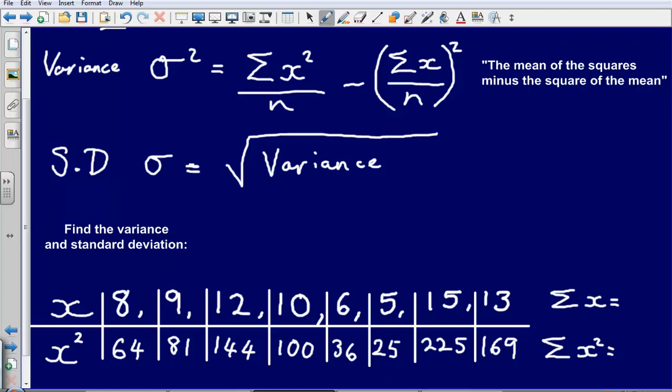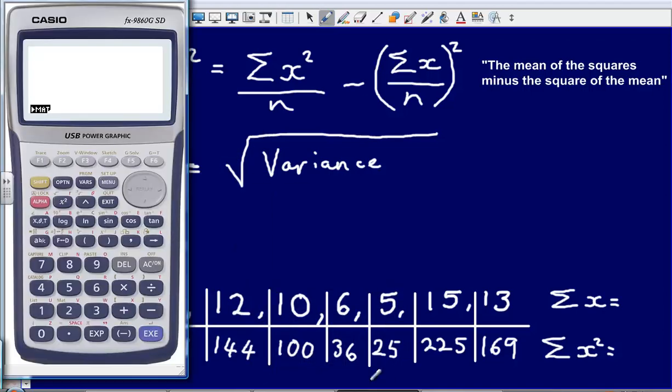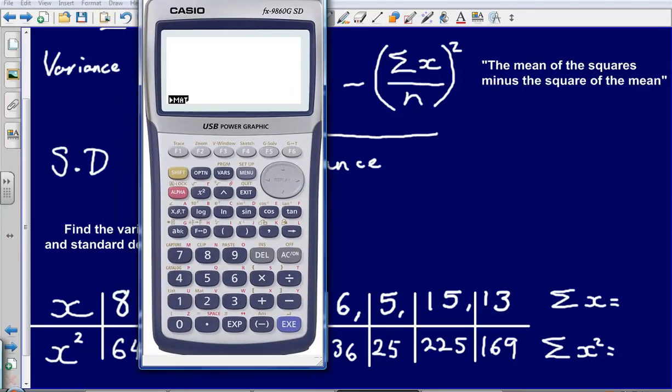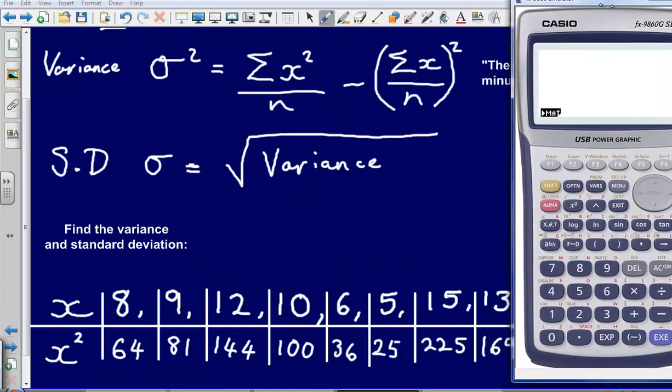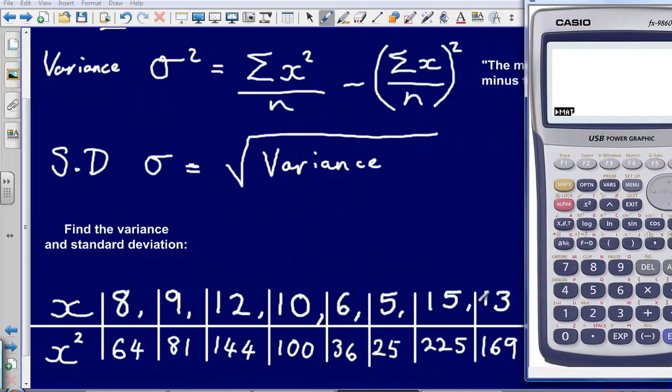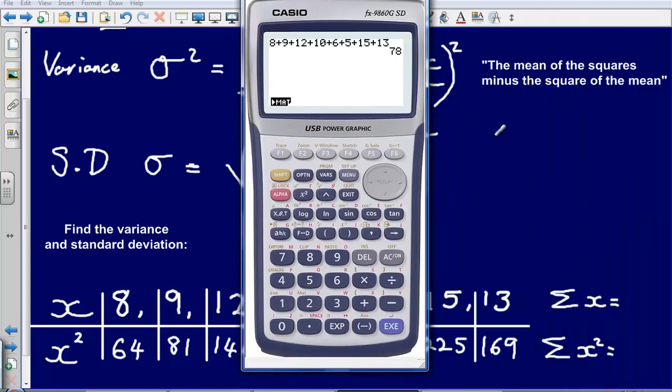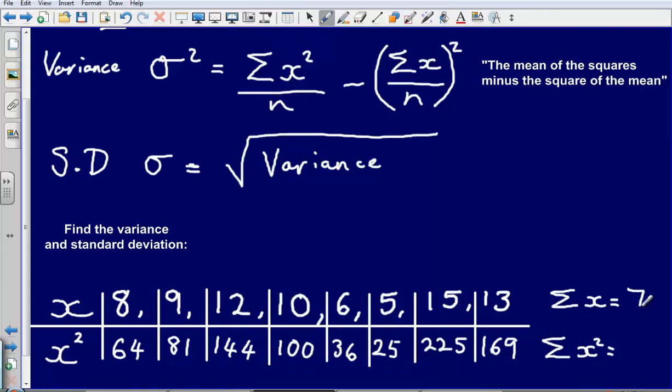Now for this, I'm simply going to use a calculator. So using a calculator, being a bit lazy really, we're going to just add all of these up. So 8 plus 9 plus 12 plus 10 plus 6 plus 5 plus 15 plus 13. That gives me a value of 78. So this sums to 78.